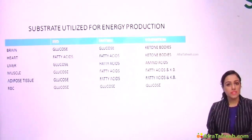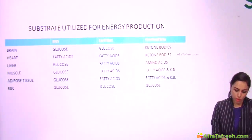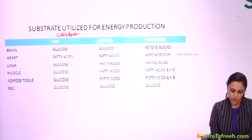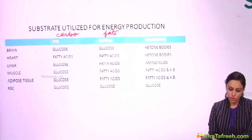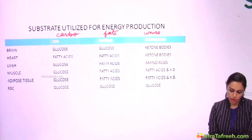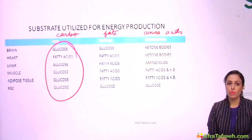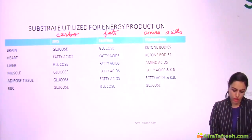As I told you in the previous video, carbohydrate is the main fuel in the fed state, fats are the main fuel in the fasting state, and in starvation the body starts using amino acids and proteins. So in the fed state, the main fuel is glucose.